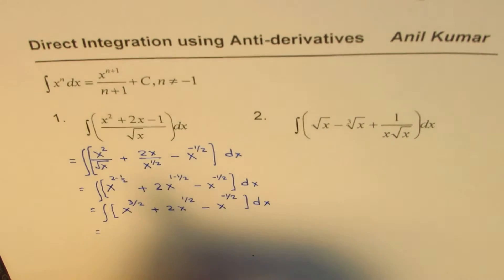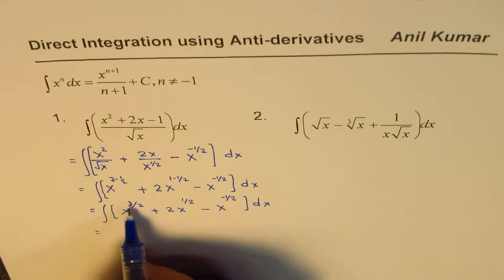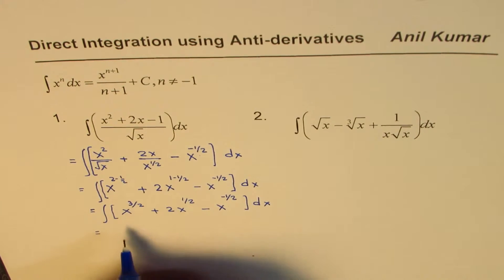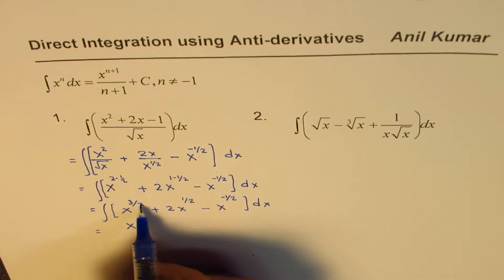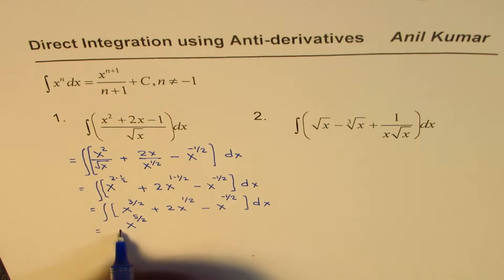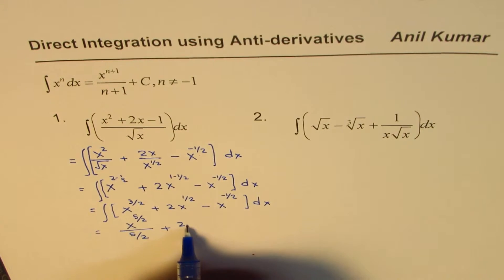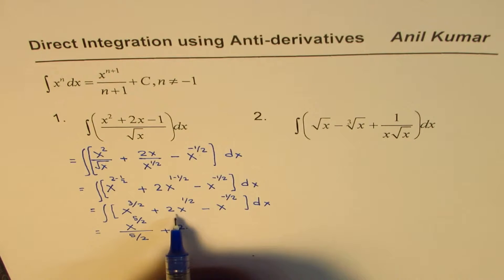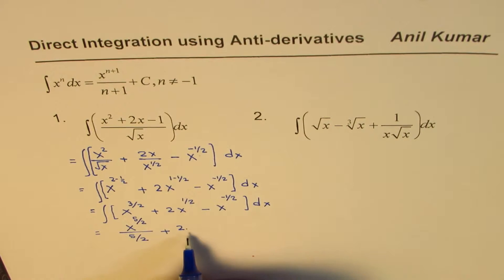Now you can apply the formula, so 3 by 2 plus 1. So you get x to the power of plus 1 will give you 5 by 2. Divided by 5 by 2, plus 2 times, so that's the property of integrals. So constant gets multiplied by, just as you have in derivatives.